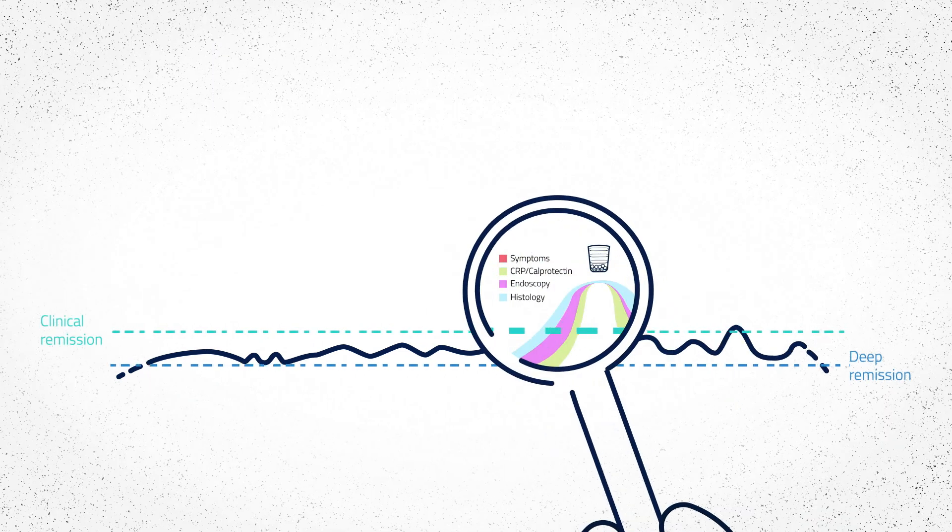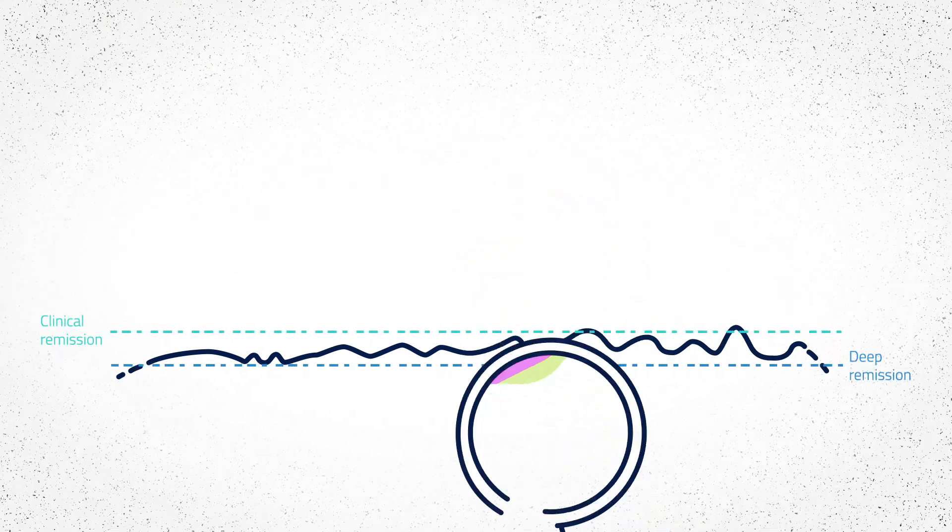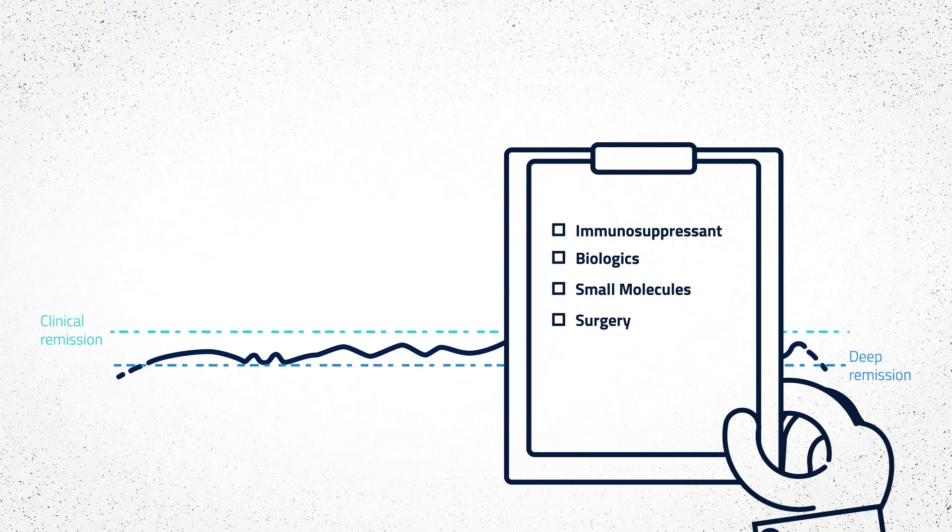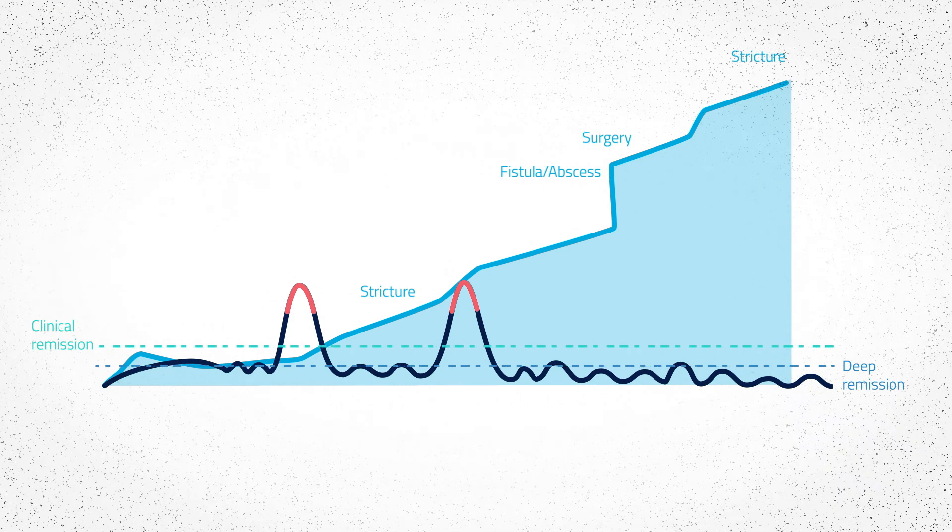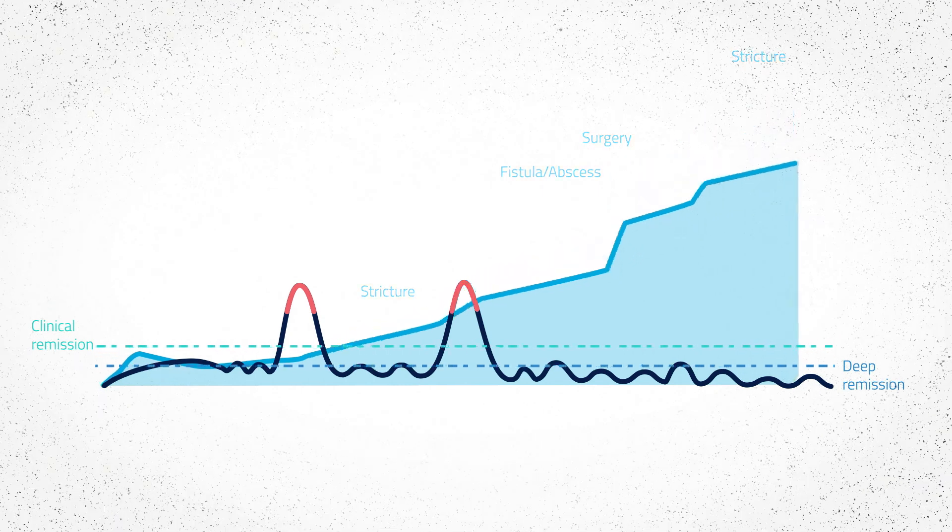Instead, we should monitor closely for steroid dependence and rapidly escalate patients onto effective therapies to help avoid repeated disease flares, disease progression, and to help prevent unnecessary, irreversible bowel damage.